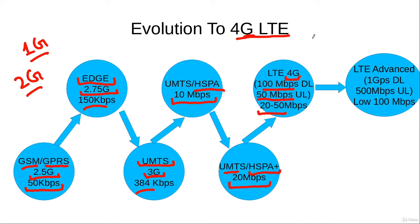LTE 4G technology then evolved into LTE Advanced, where the targeted data rate in the downlink was 1 gigabit per second and the targeted uplink rate was 500 megabits per second. However, the actual data rate a user experienced under normal circumstances was in the low hundreds of megabits per second.